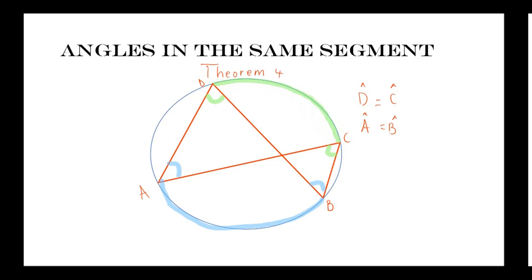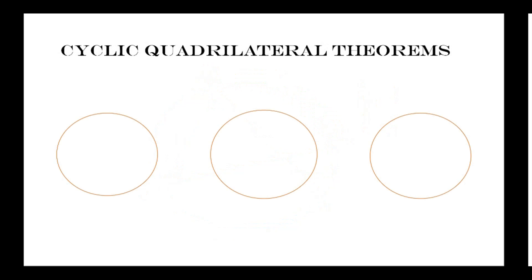Now let's look at cyclic quadrilaterals. We're going to start off with Theorem 5. The cyclic quadrilateral theorem states that opposite angles of a cyclic quadrilateral are supplementary.